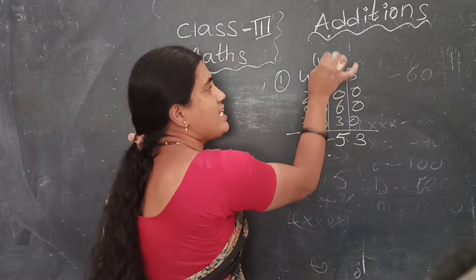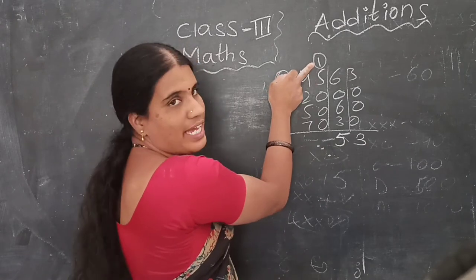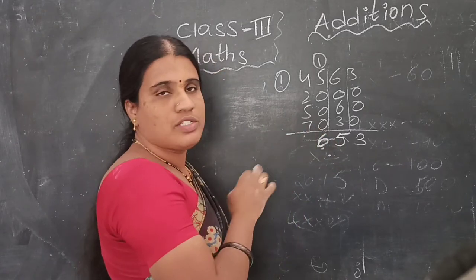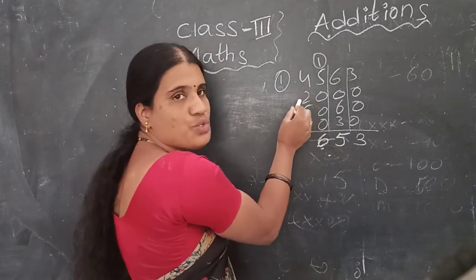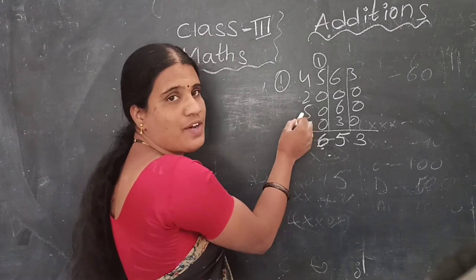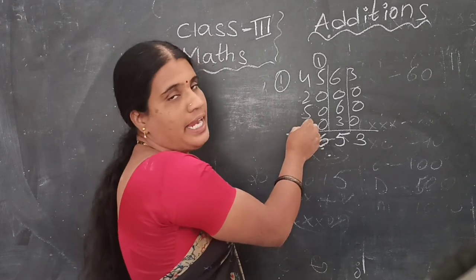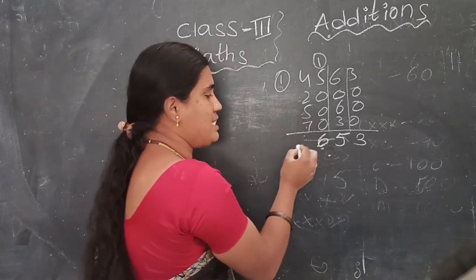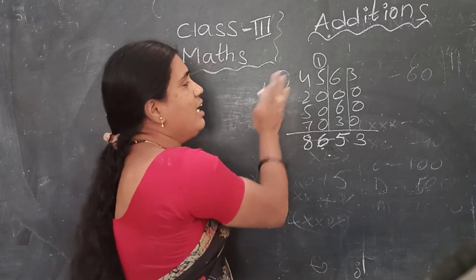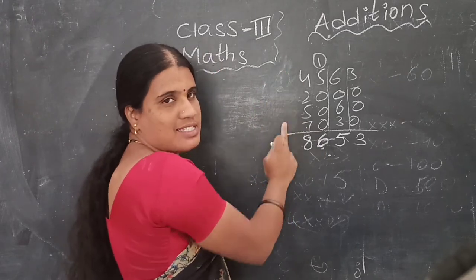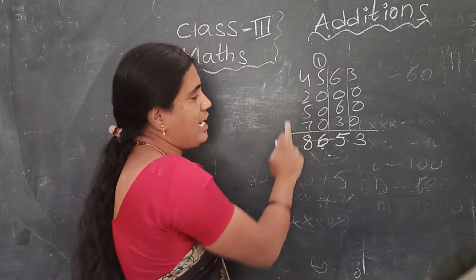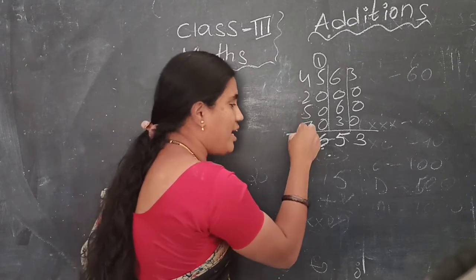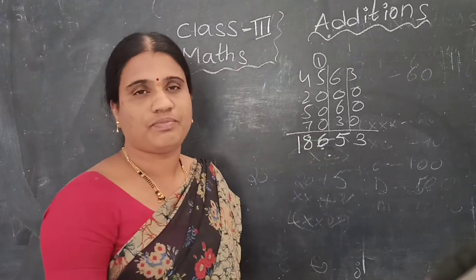So 5 goes here, and 1 is the carry. Next, 5 plus 1 is 6. 6 plus 5 is 11. 11 plus 7 is 18. So 18 means 8 goes here and 1 is the carry. Any number not there to write, you still write the carry. Any row, any column — you have to write the carry here.